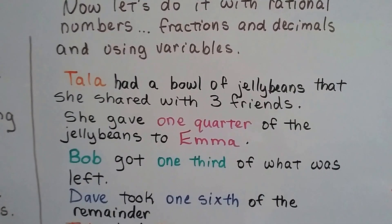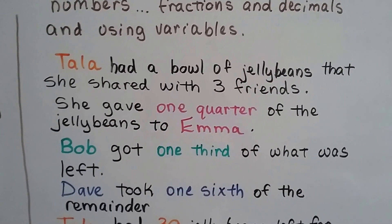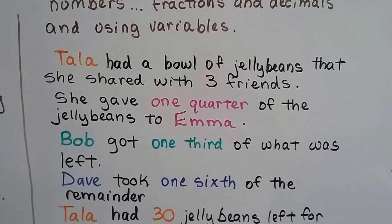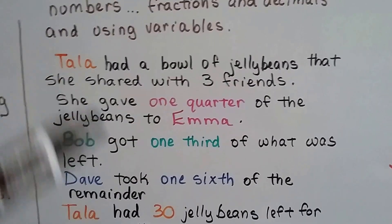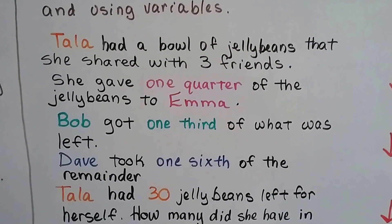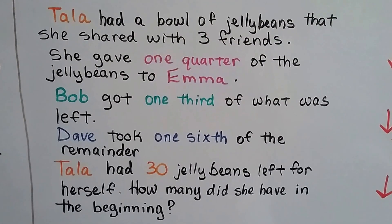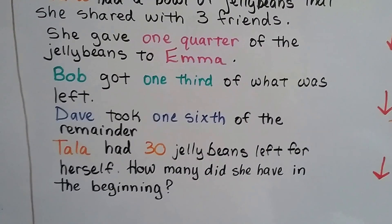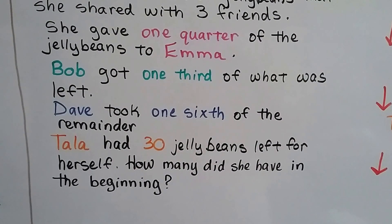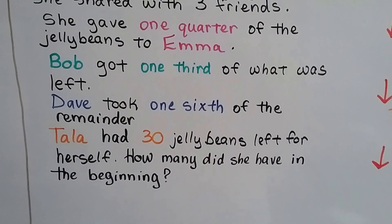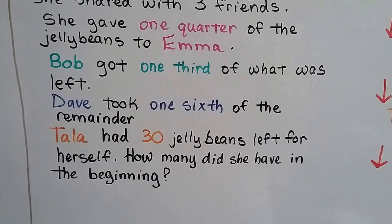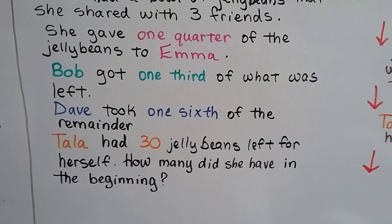Here's our problem. Tala had a bowl of jelly beans that she shared with three friends. So now we know it's going to be split between four people. She gave one-quarter of the jelly beans to Emma. Bob got one-third of what was left after that. Dave took one-sixth of the remainder from after Bob. Tala has thirty jelly beans left for herself. How many did she have in the beginning?